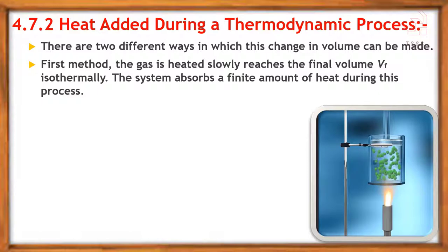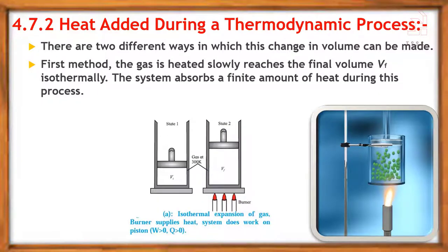The volume increases. In this diagram, we have point A showing isothermal expansion of gas. A burner supplies heat and the system does work on the piston. In state 1, we have limited volume with heating. In state 2, heat is provided and volume changes.